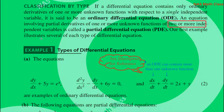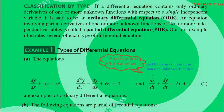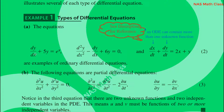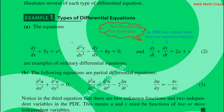If a differential equation contains derivatives with respect to two or more independent variables, it is called a partial differential equation. For example, dy/dx plus 5 equals e to the power x — here there is one dependent variable and one independent variable, so this is an ordinary differential equation.